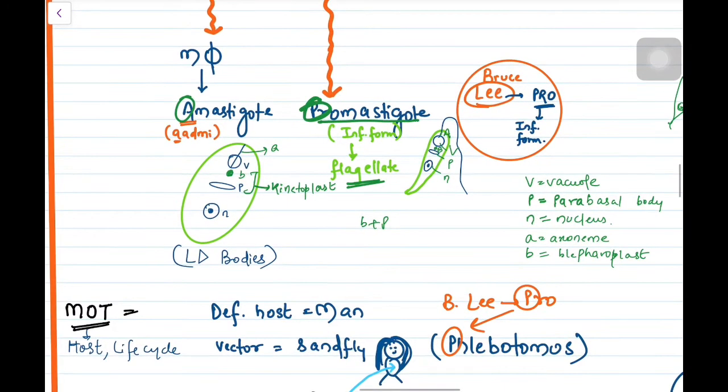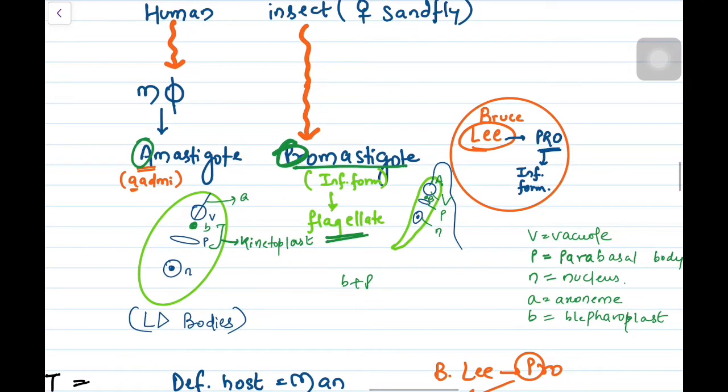If we look at amastigote, it is like an egg. A for amastigote, A for egg, it's oval. It has exactly the same structures but no flagella. This amastigote is called LD bodies - Leishmania donovani bodies. This is just to remember. Because we will see in life cycle, this Bruce Lee. So Lee for leishmaniasis. Bruce Lee needs to be infected by a pro, means very genius pro. So promastigote will infect.